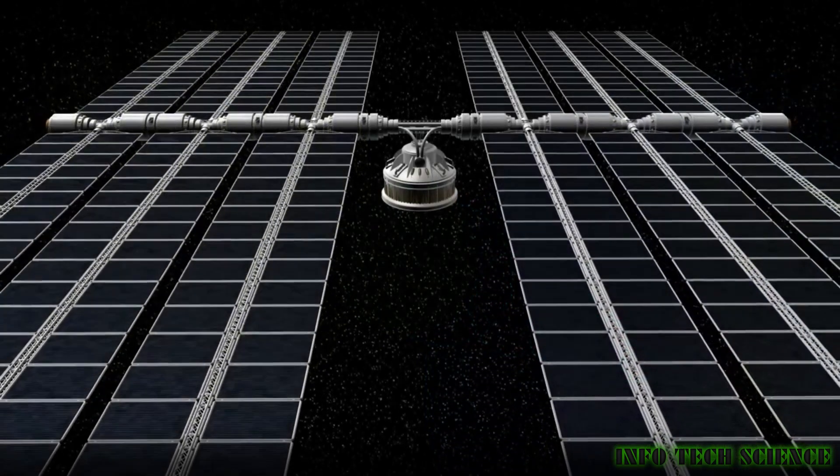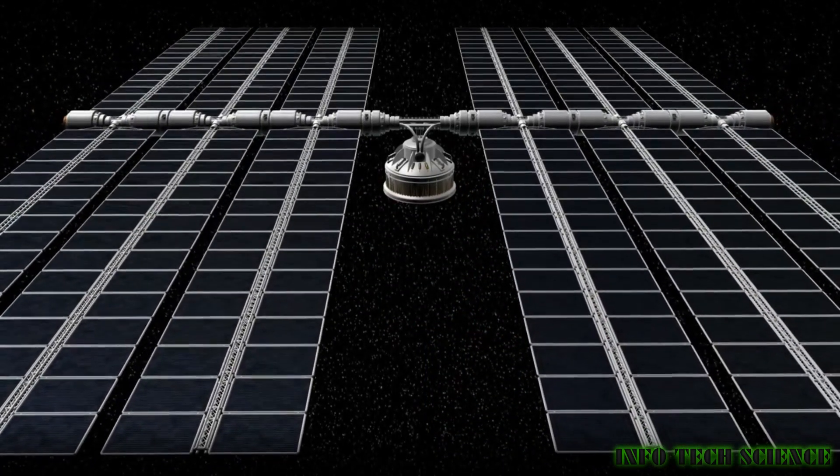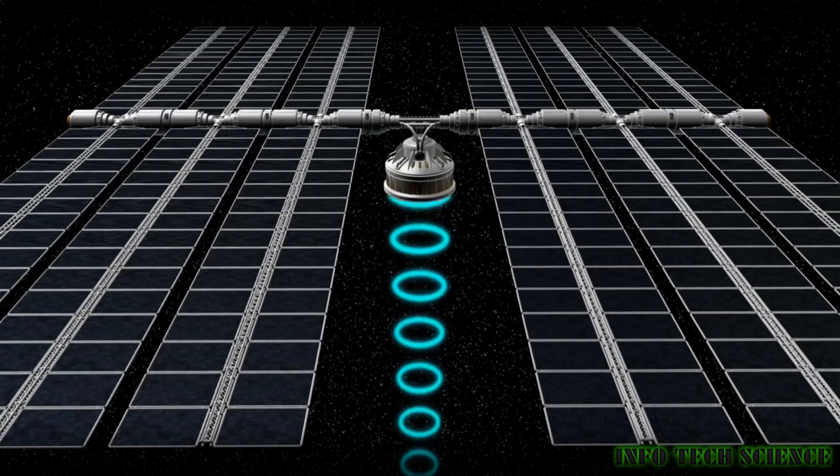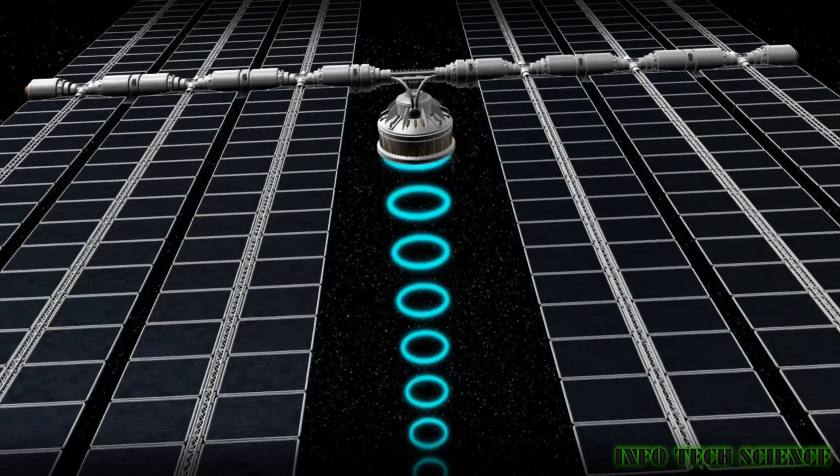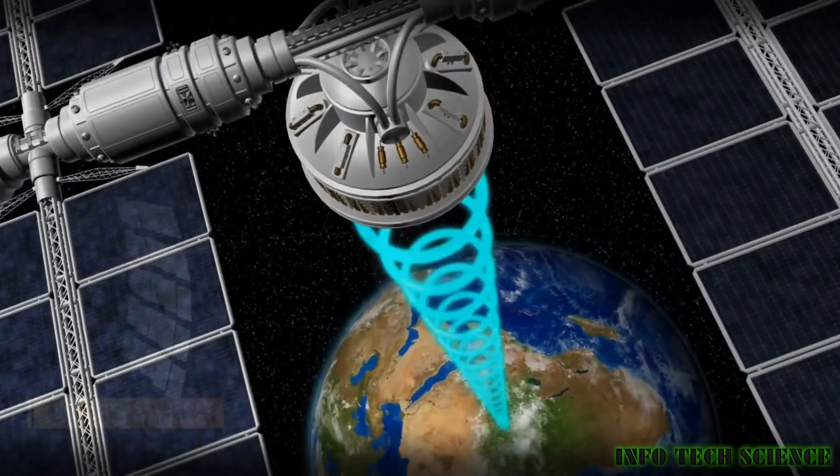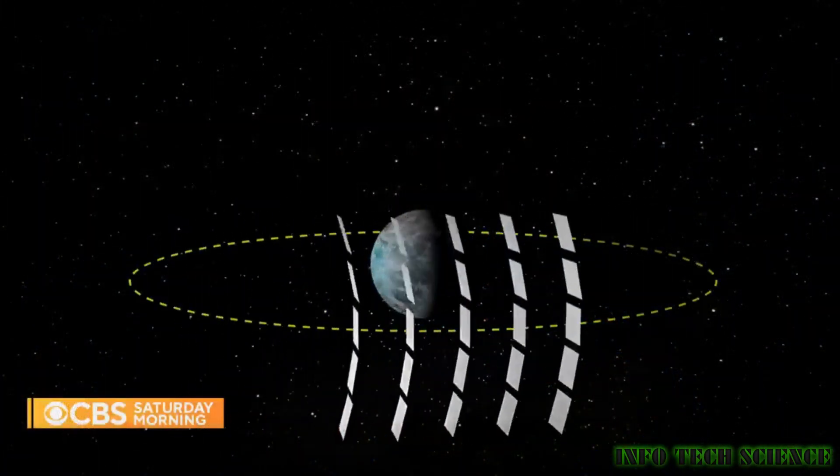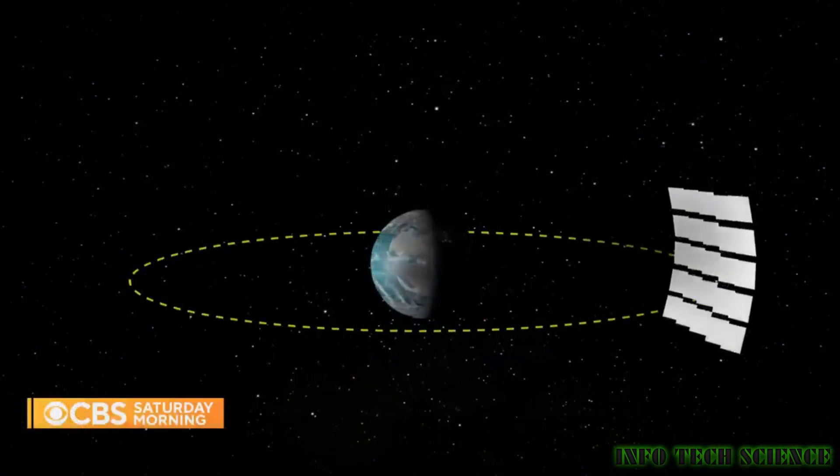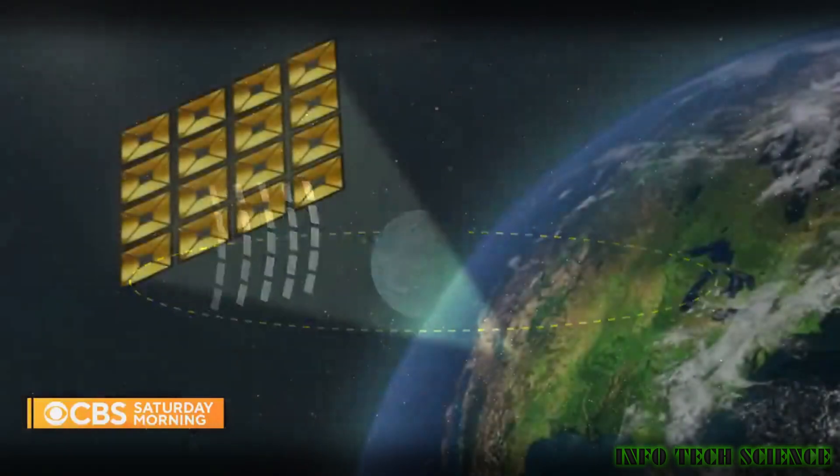In fact, a space solar power prototype has demonstrated its ability to wirelessly beam power through space and direct a detectable amount of energy toward Earth for the first time. The experiment proves the viability of tapping into a near limitless supply of power in the form of energy from the Sun from space.